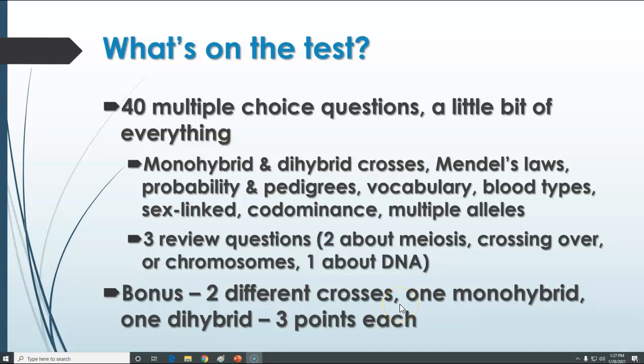So what about the test? There are 40 multiple choice questions on the test. They cover pretty much everything that we've talked about in genetics, like the different kinds of crosses, Mendel's laws, probabilities, pedigrees, blood types, sex-linked traits, co-dominance, multiple alleles, polygenic traits — all that kind of good stuff. We'll go over some of the specifics on that, but basically pretty much everything we've done.